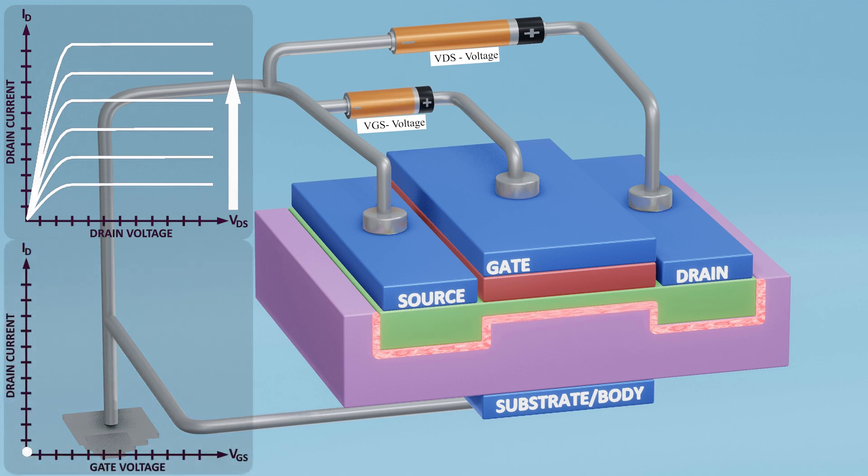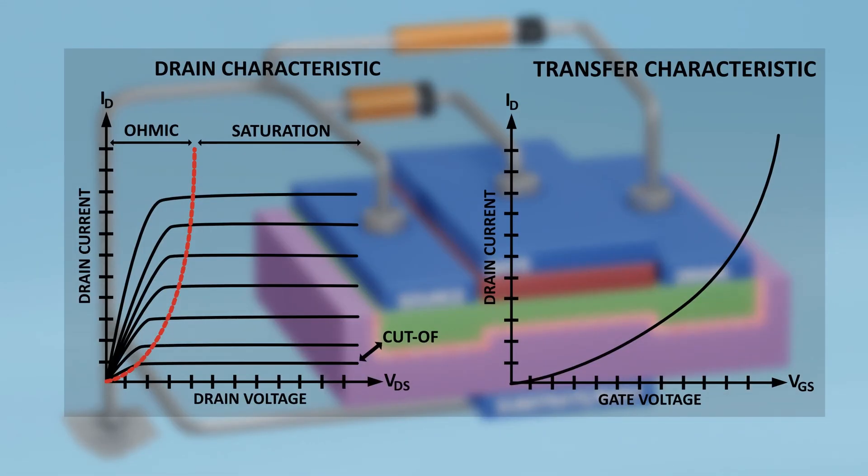MOSFETs are voltage-controlled devices because the amount of voltage applied to the gate controls the flow of current from the drain to the source. The two graphs shown in the video represent the drain characteristics and the transfer characteristics constant VDS of the MOSFET.